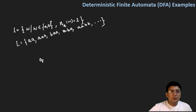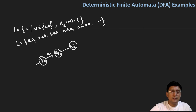The smallest string is AA. On A, I should move from q0 to q1, where q0 is the initial state. Then on A from q1, I should move to the q2 state. And q2 is the final state.